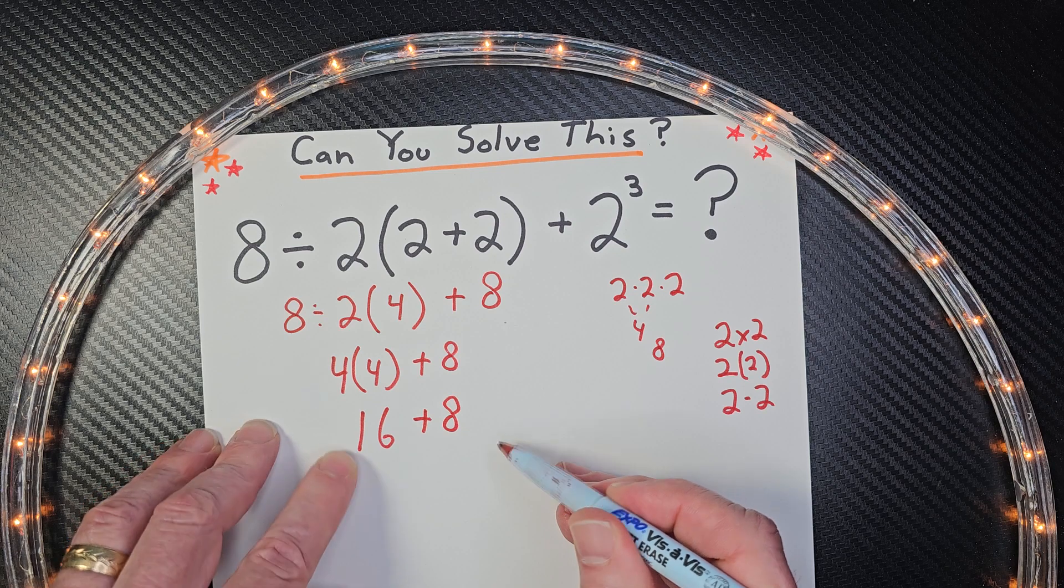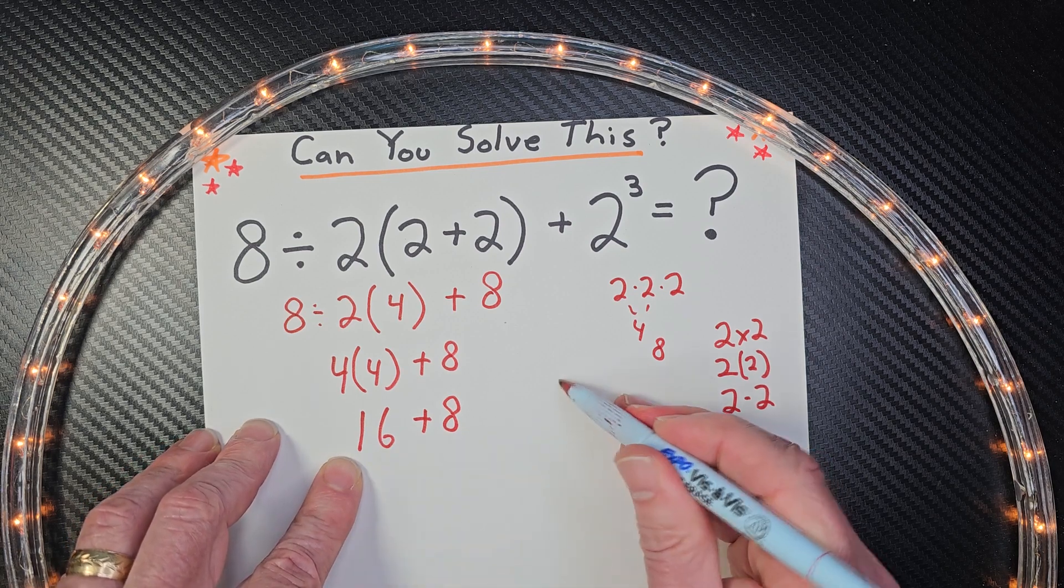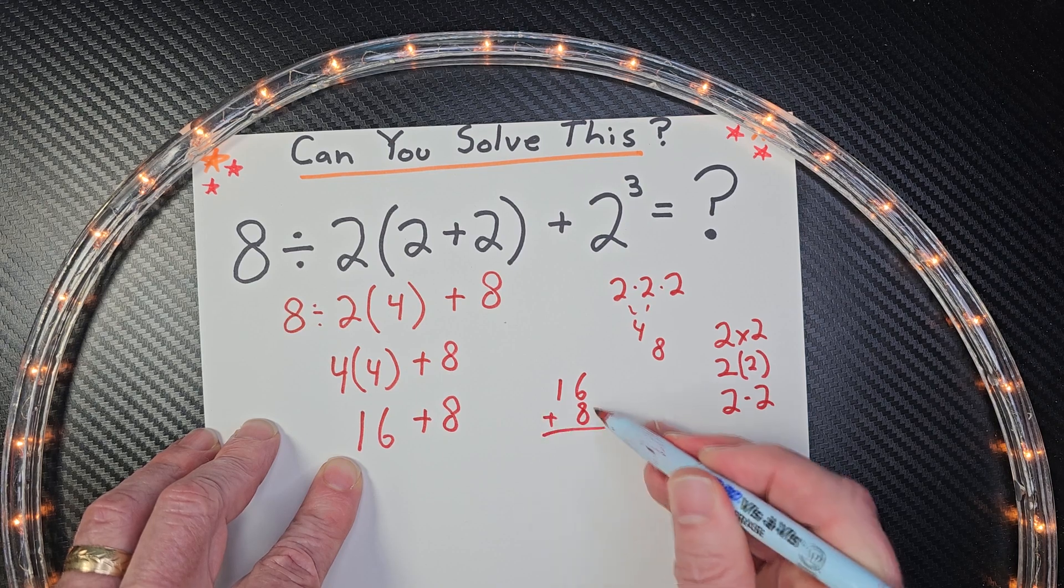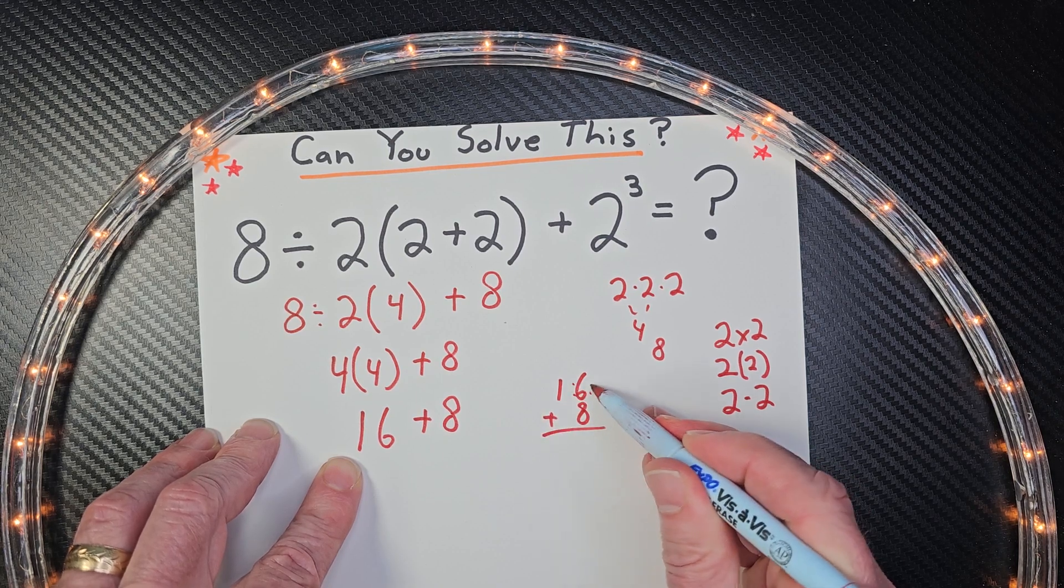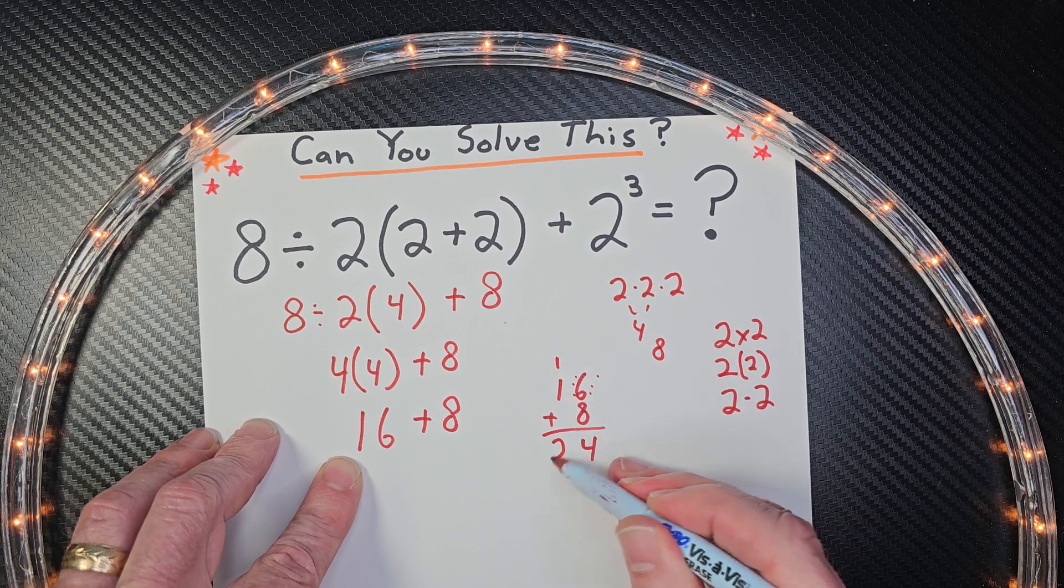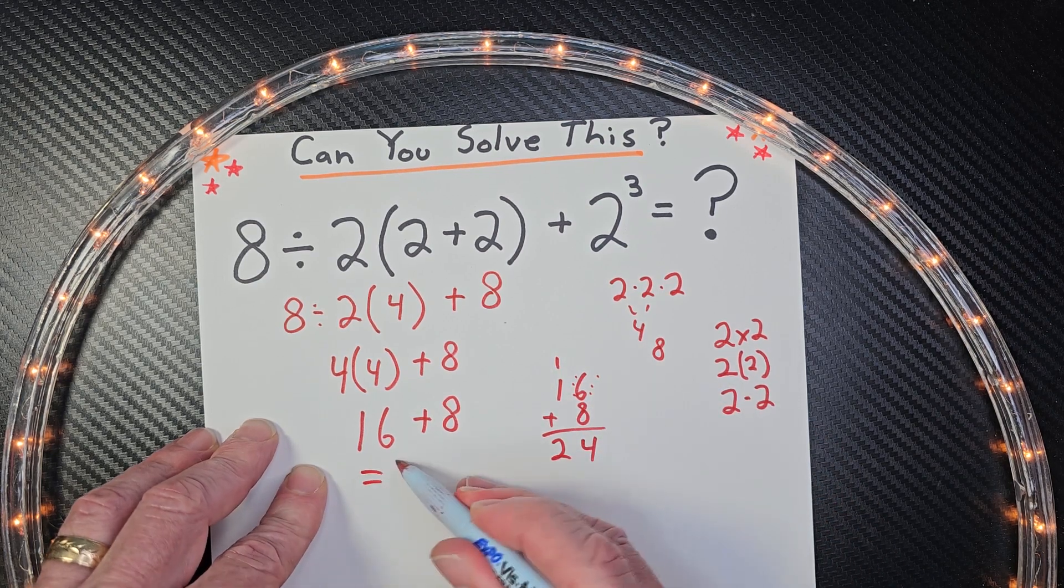All right. So then I'm going to add these two numbers. If you can't add that in your mind, you can just write it out long ways. So 8, 9, 10, 11, 12, 13, 14. Carry the 1. And then we add the 2 here. So this equals 24.